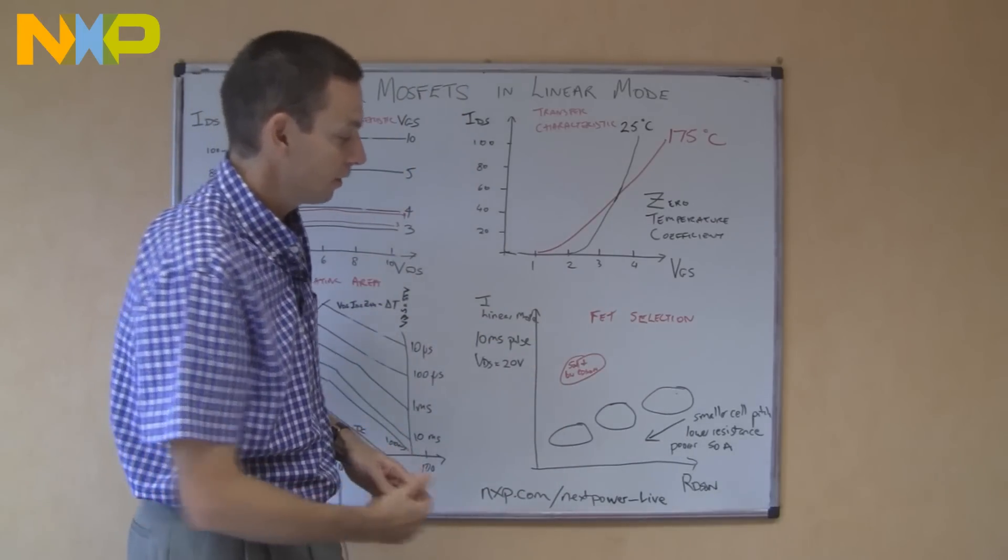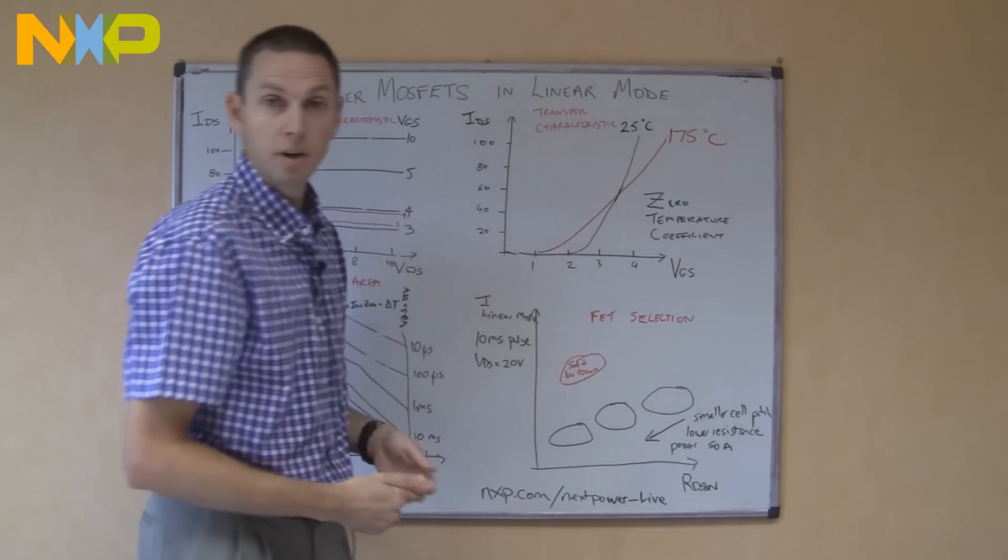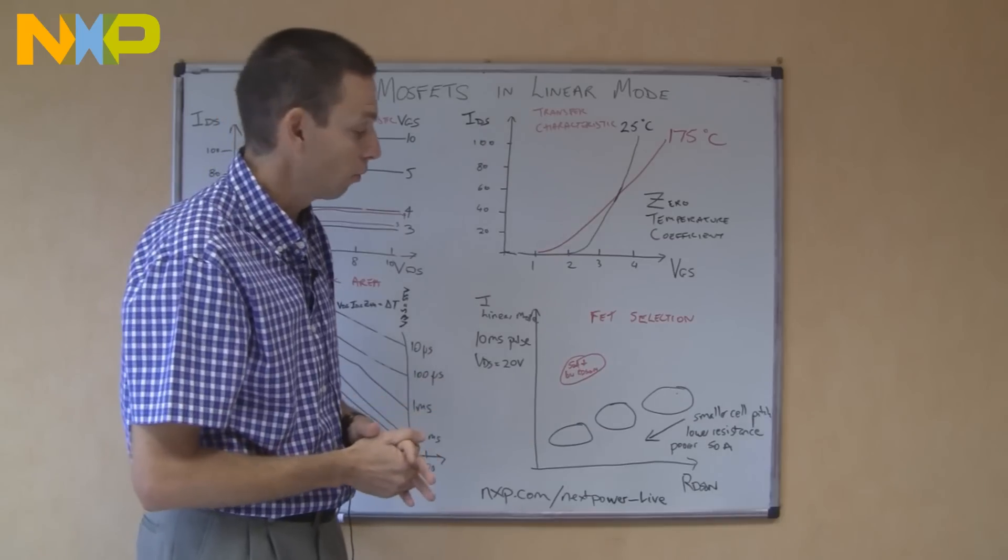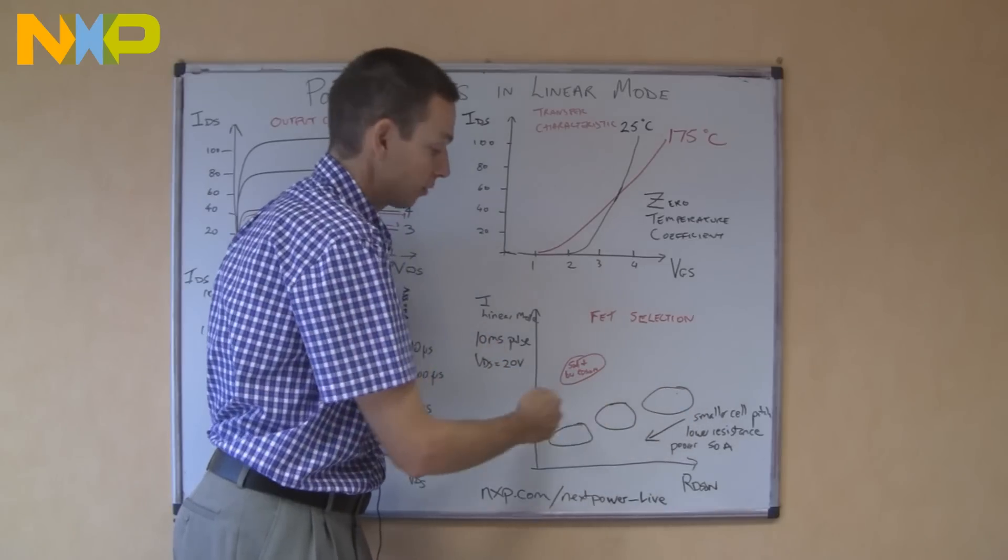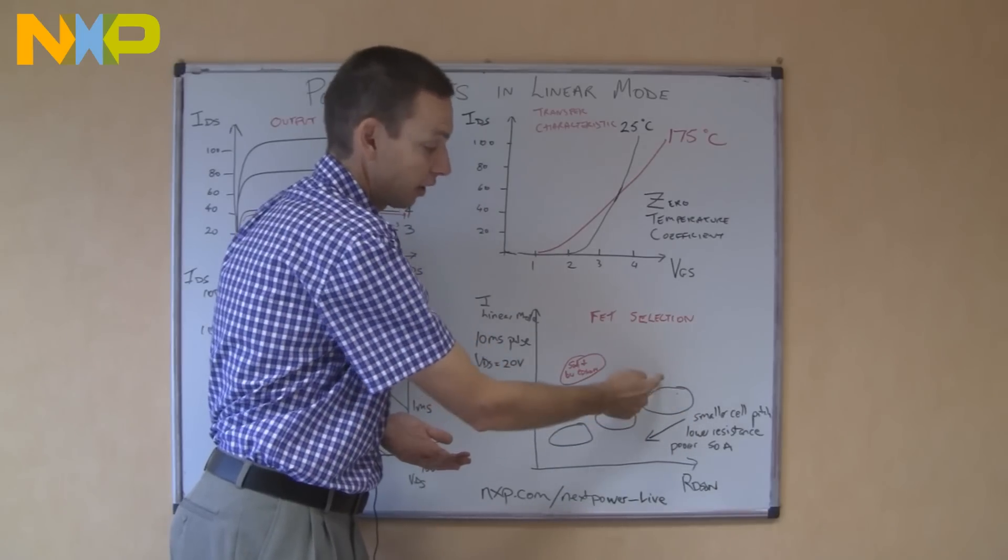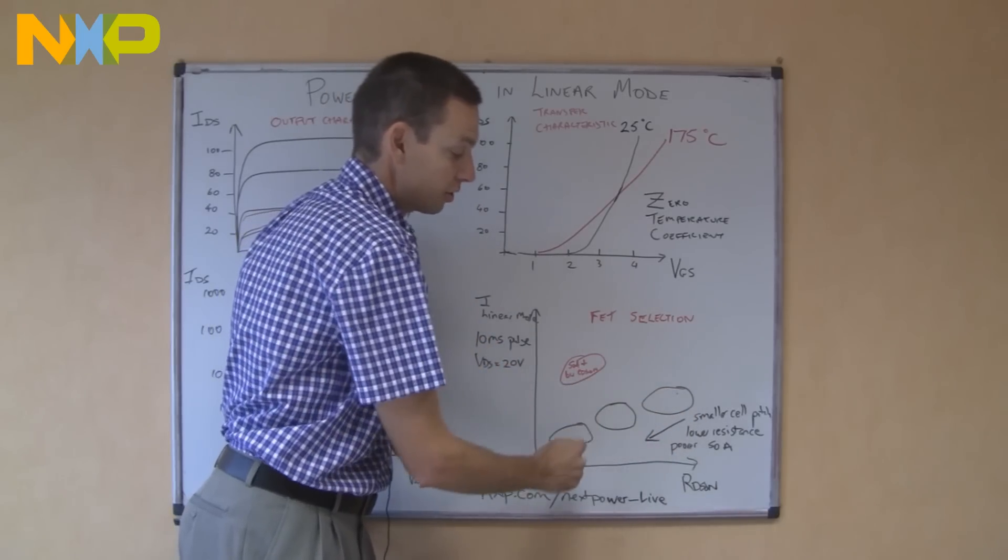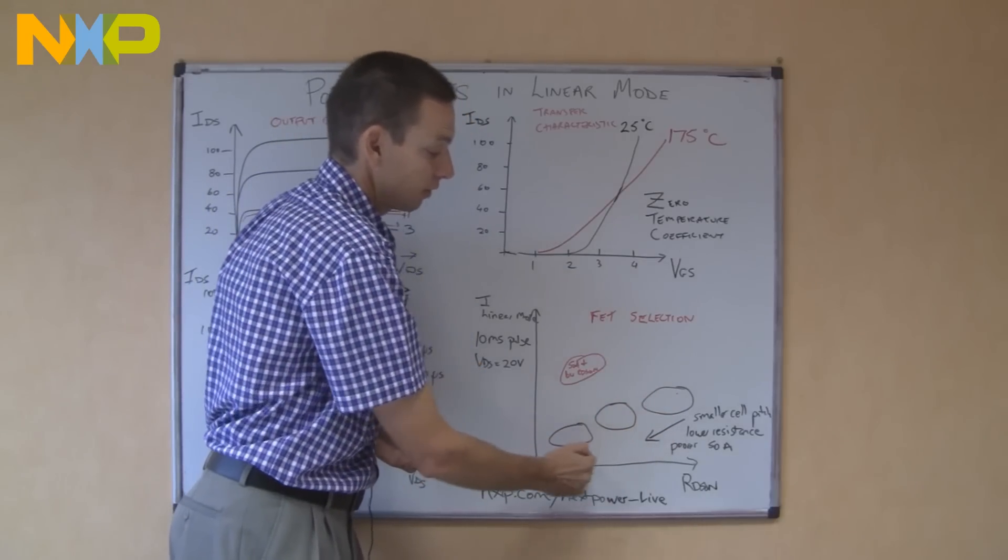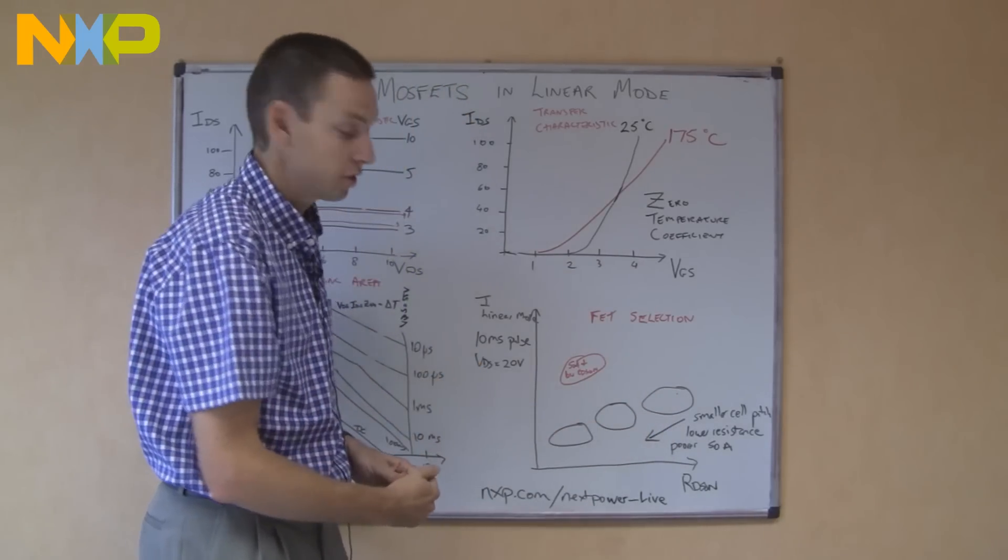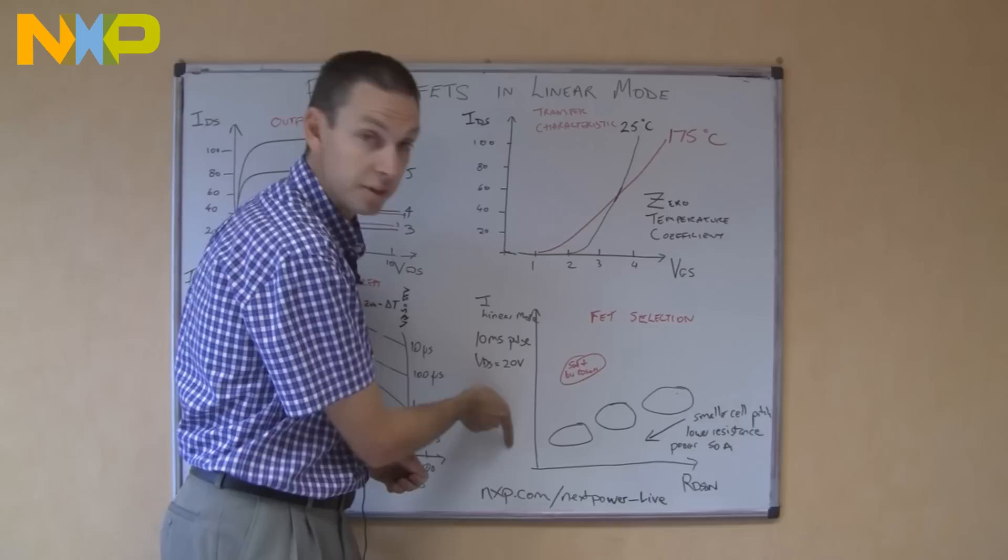Now what's happened over the years, as MOSFETs have become, they've become optimized more and more for low resistance. If we went back about 20 years ago, we had a family of MOSFETs out here with quite good linear mode capability, quite a high current, but with big resistance. As MOSFETs have been developed, they've been developed for lower and lower resistance, so they've moved in this direction, the black curves, but unfortunately their linear mode capability has decreased.